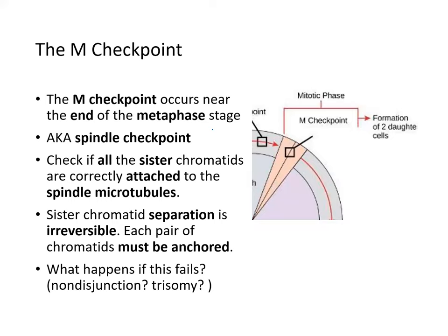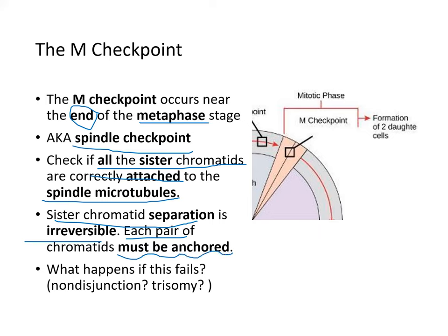The M checkpoint, also called the spindle checkpoint, occurs at the end of metaphase. It checks whether all sister chromatids are correctly attached to the spindle microtubules. If they are not, mitosis will not correctly separate the sister chromatids. Sister chromatid separation is irreversible, so each pair must be anchored and separated properly. Failure here can result in non-disjunction — for example, Trisomy 21, or Down syndrome.